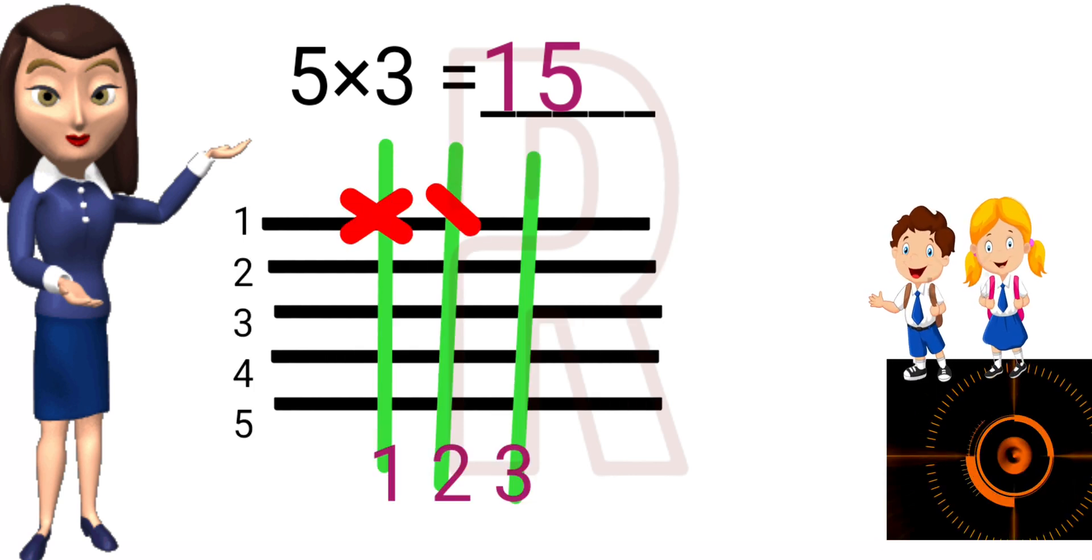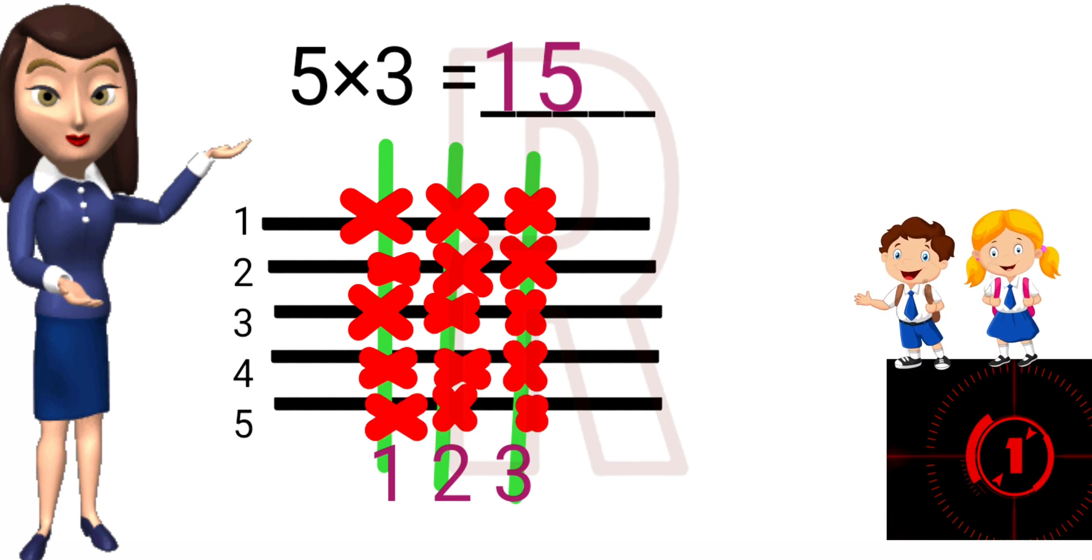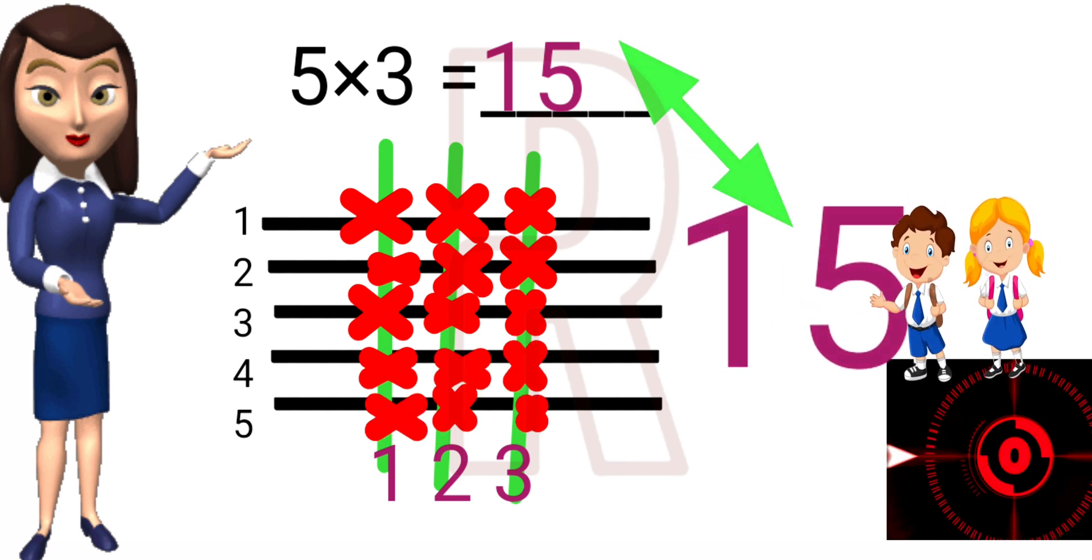Count the number of intersections: 1, 2, 3, 4, 5, 6, 7, 8, 9, 10, 11, 12, 13, 14, 15. Answer is 15. That is 5 into 3 is 15.